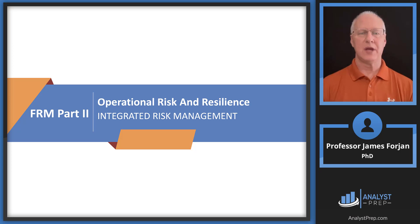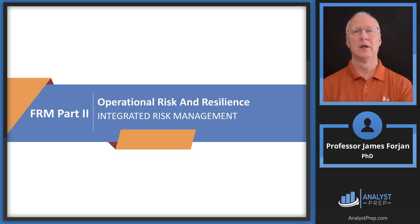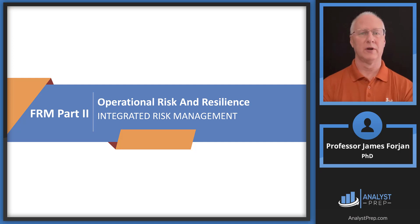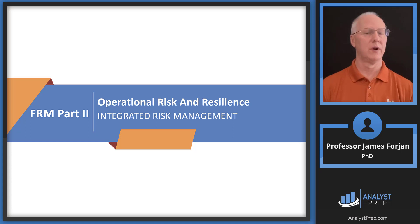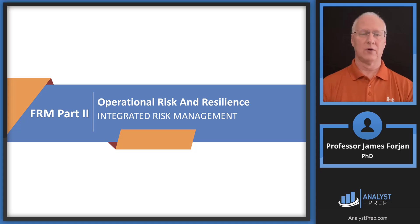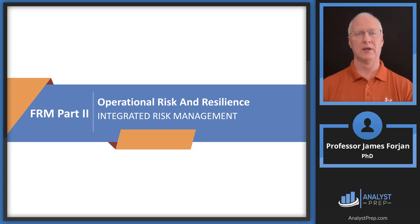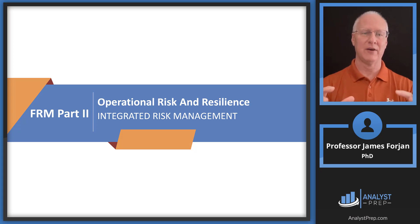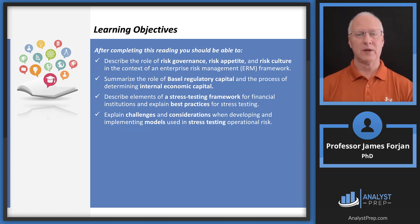Hey, it's Jim and this is FRM Part 2, the topic on operational risk and resilience and the chapter on integrated risk management. I was a little curious as to the selection that GARP chose for the title of this chapter — integrated risk management instead of enterprise risk management — because those two terms are essentially interchangeable. This chapter is really just a wrapping up of how we throw all these risks together and put them under some kind of an umbrella framework.